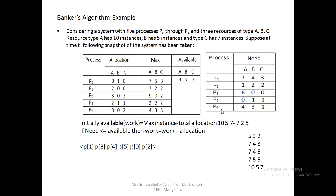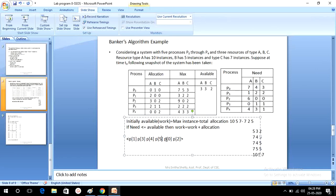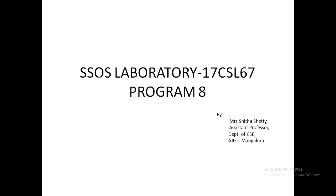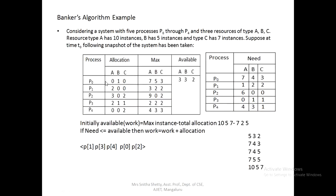Next step is P4. Need of P4 is 4,3,1. Is 4,3,1 ≤ 7,4,3? Yes. So we update work = 7,4,3 + allocation of P4 (0,0,2) = 7,4,5. Available matrix is updated to 7,4,5. P4 is allowed to execute after P3. So far the safe sequence is P1, P3, P4.